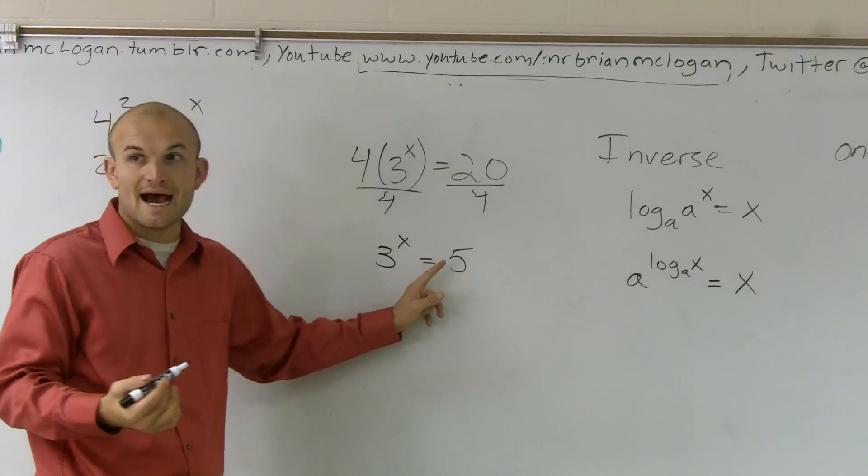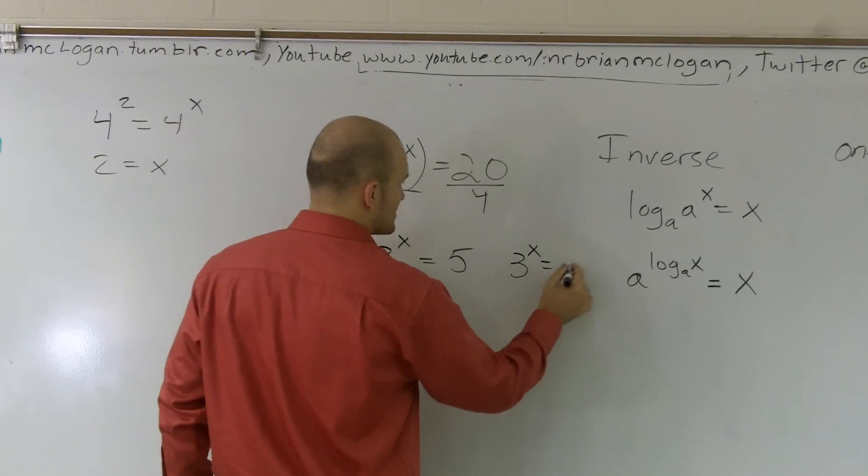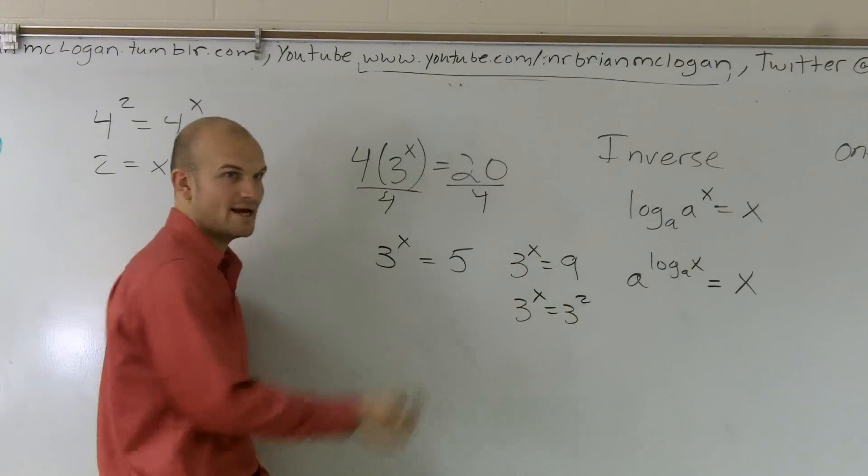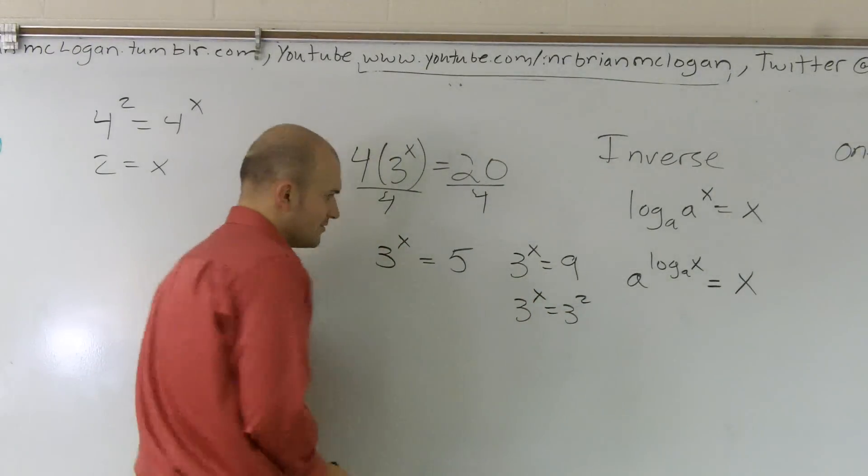If it was easy, if this was nine, that would work. If I had like three to the x equals nine, you could say three to the x equals three squared, right? And x equals two. But we don't have it that easy. We have five.